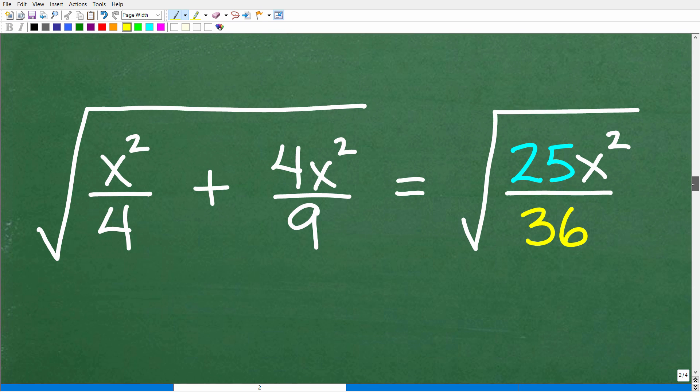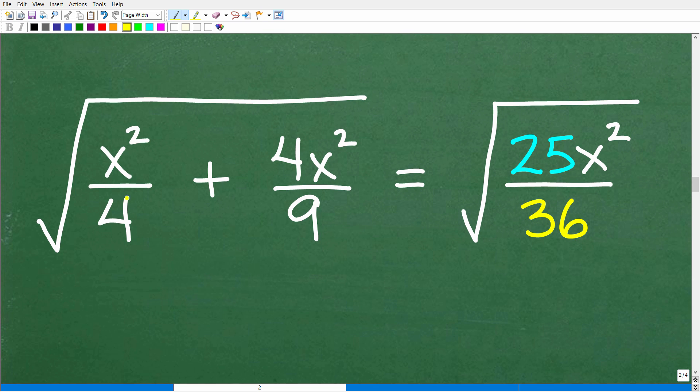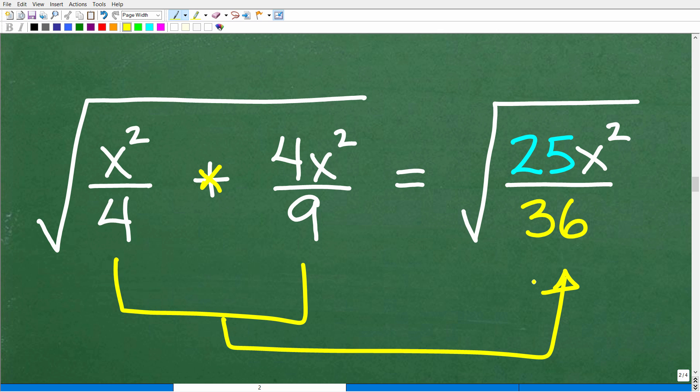Let's finish up this problem now. We have the square root of x squared over 4 plus 4x squared over 9. We realize this is not multiplication. This is addition. So there is no property. So we had to add these up. And here is what we got. We got 25x squared over 36.